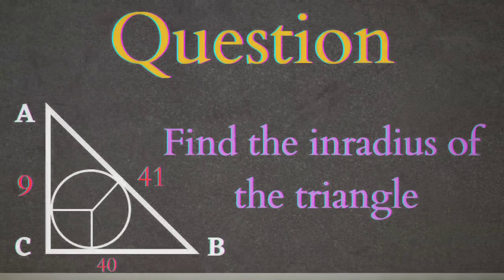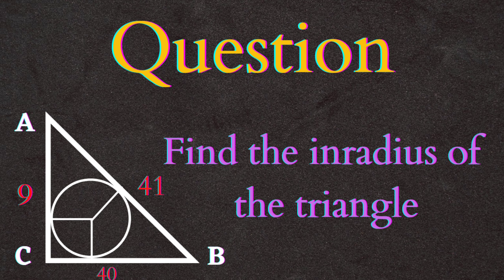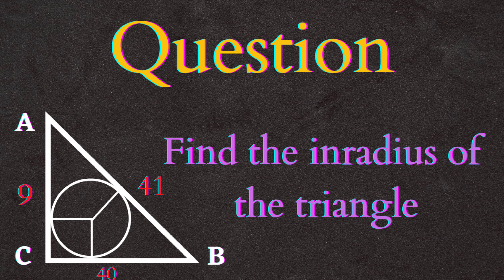So our question is, what is the in-radius of the circle shown in the figure? Now we are given a triangle whose sides are 9, 41, and 40 centimeter respectively, and we have to find the in-radius of the triangle.